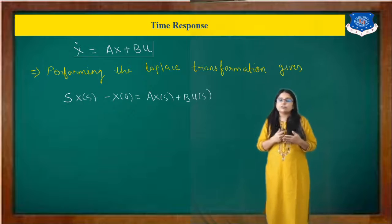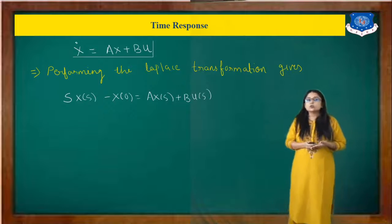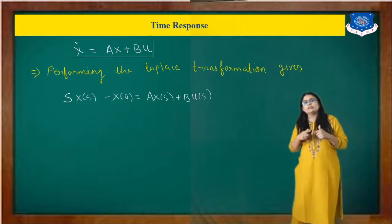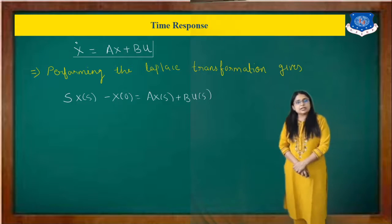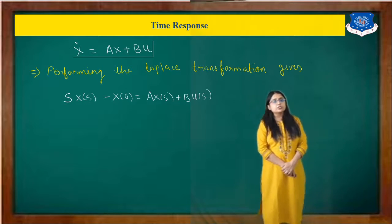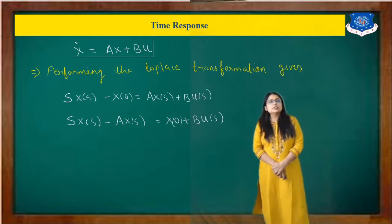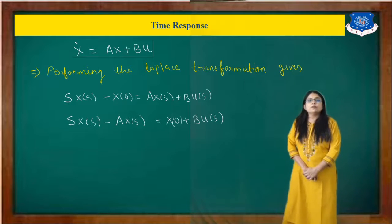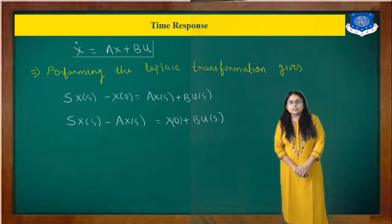If we want to cancel out that differentiation, we have to take the integration. The best solution is to take the Laplace and then take the inverse Laplace. So we have s·X(s) minus x(0) equals A·X(s) plus B·U(s), which rearranges to s·X(s) minus A·X(s) equals x(0) plus B·U(s).